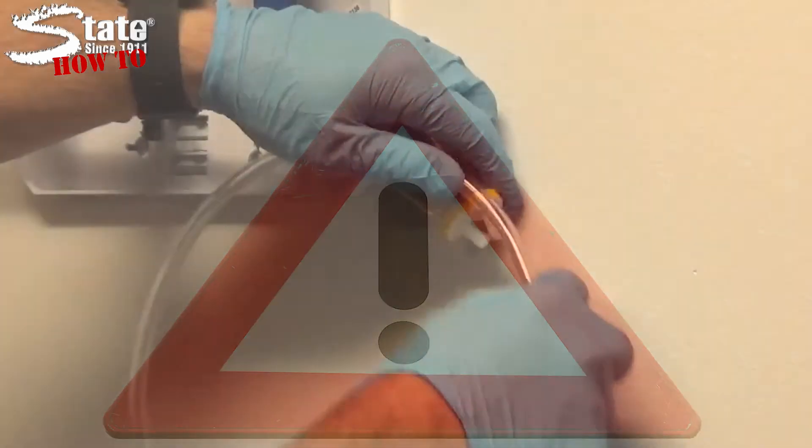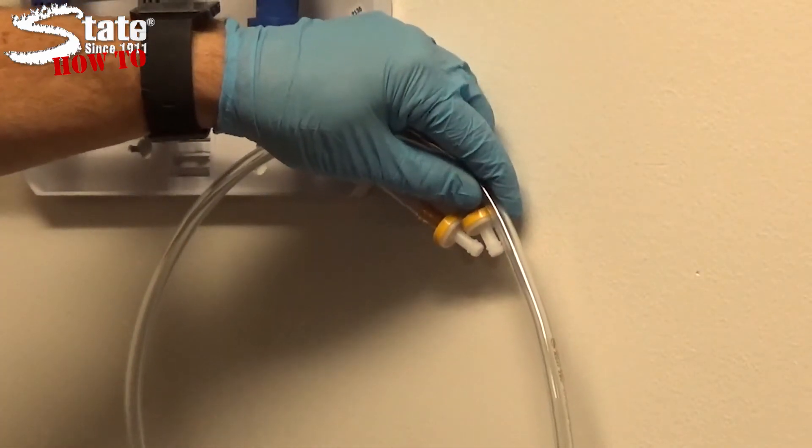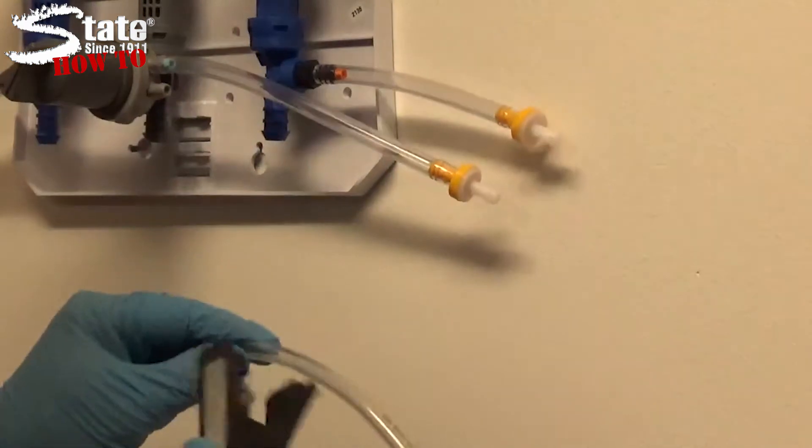Before you begin handling chemicals, it is imperative that you use the proper PPE. In this case, you will be using gloves and safety goggles. First, measure out the length of tube to get from the bottle rack to the feed tube and cut them to length.